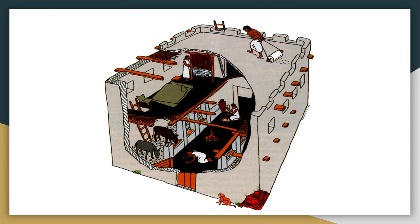The first step to understanding an ancient Israelite house is learning about the materials it is built with. The main determining factor of what a house was built with was the availability of materials. For example, if you lived in the coastal plains, your home would have been made from mud bricks because clay was readily available.